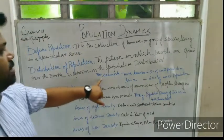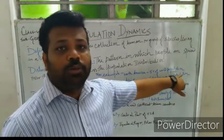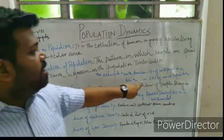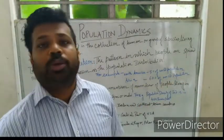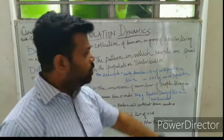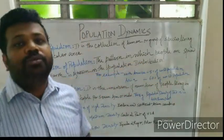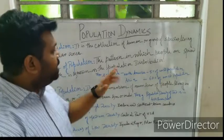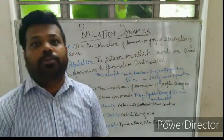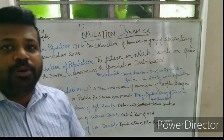For example, North America has 5% of the total world population, whereas Asian countries consist of 60% of the world population. So the population is not distributed equally. This pattern of distribution of population is called distribution of population.